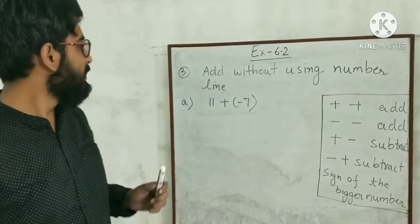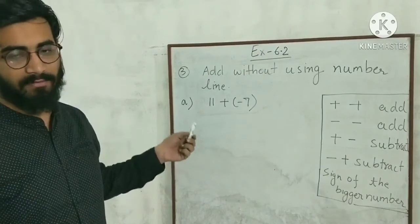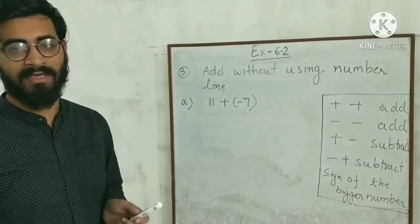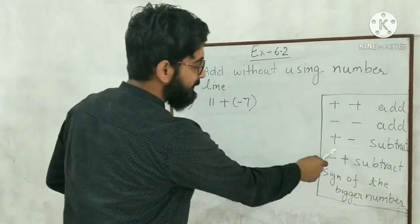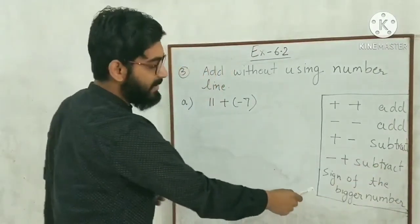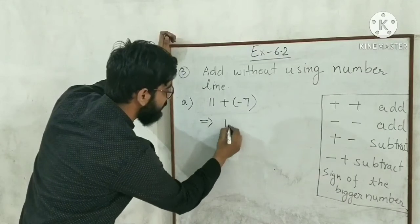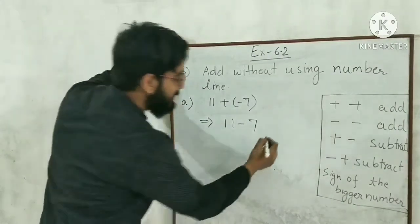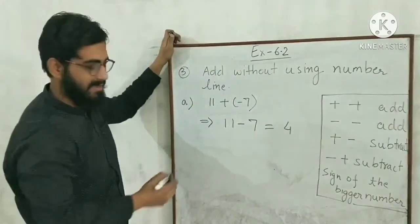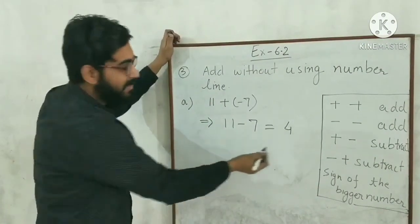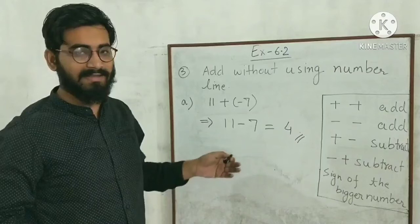Question 3: add without using the number line. Part a: 11 plus minus 7. One number is positive and one is negative, so subtract and put the sign of the bigger number. 11 minus 7 equals 4. The bigger number is 11 which is positive. So 11 plus minus 7 equals 4.